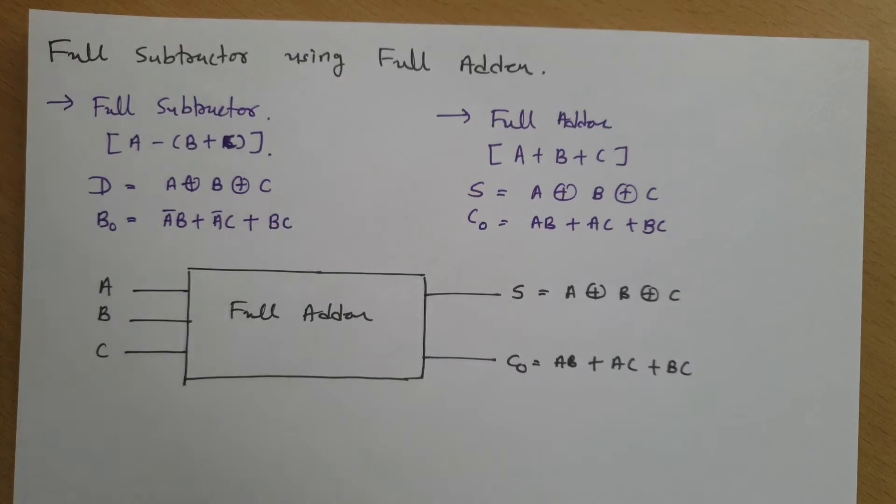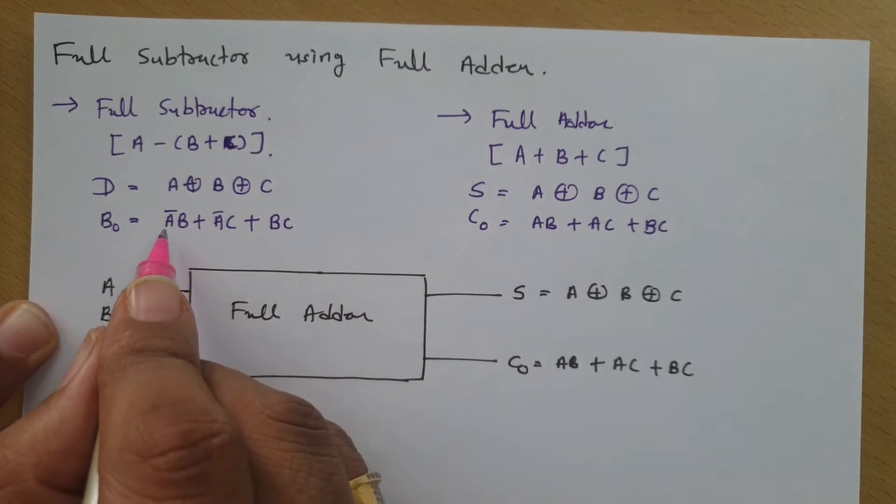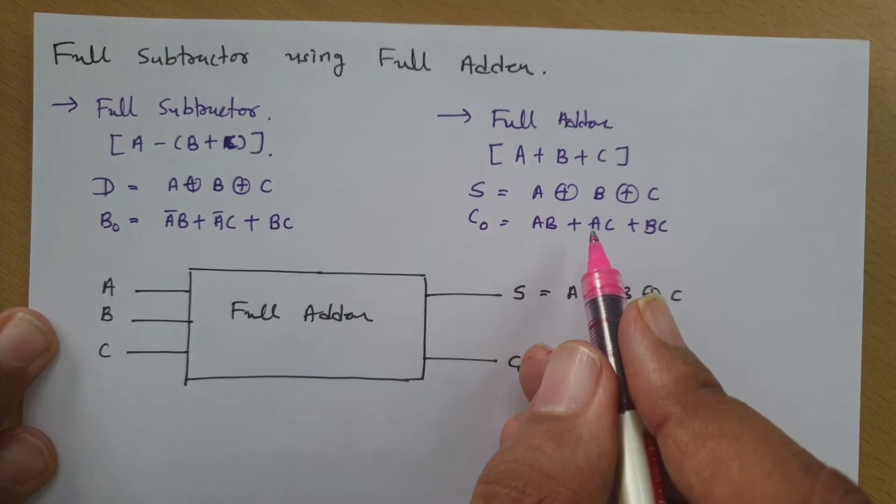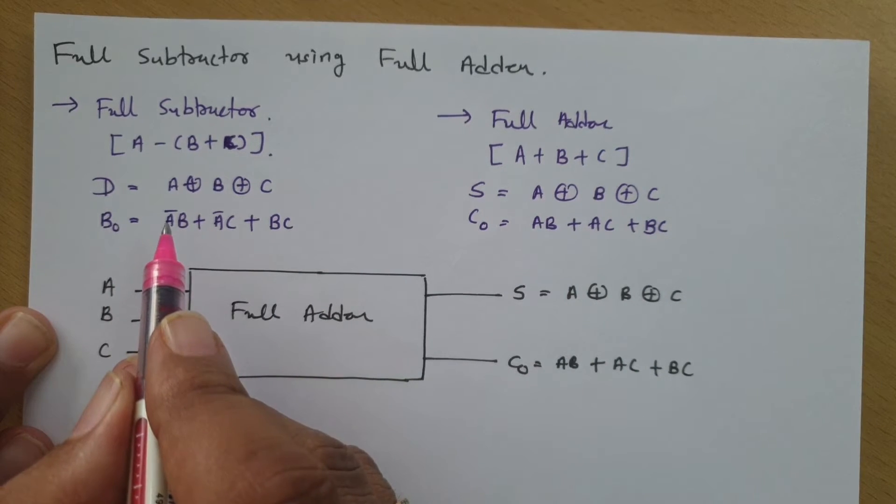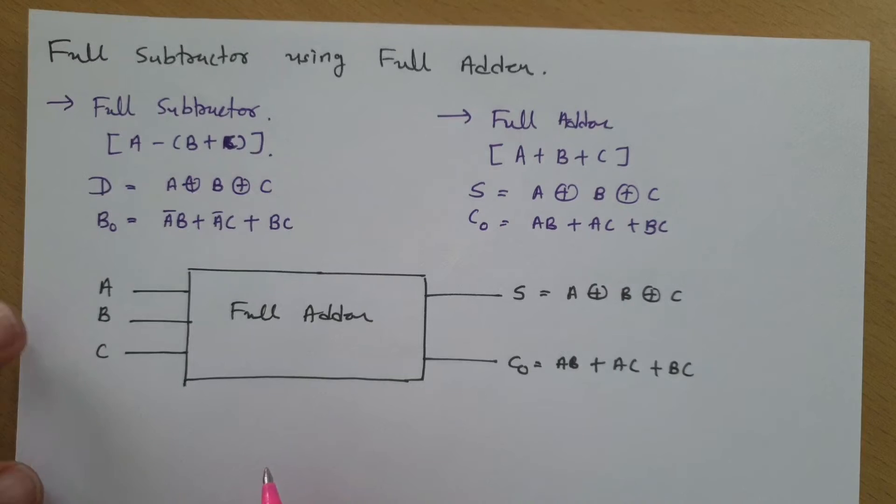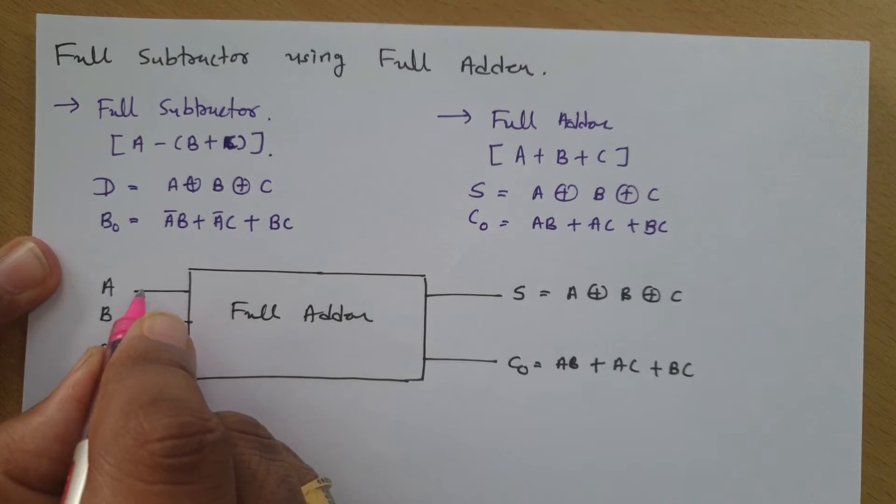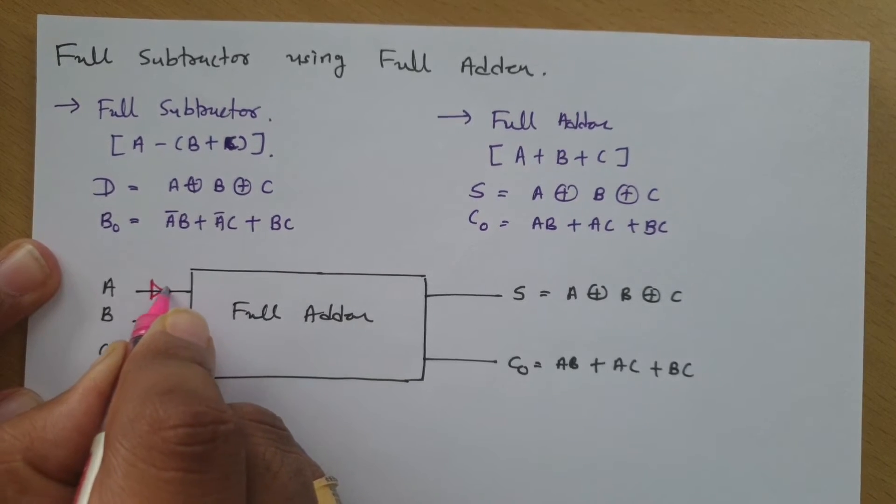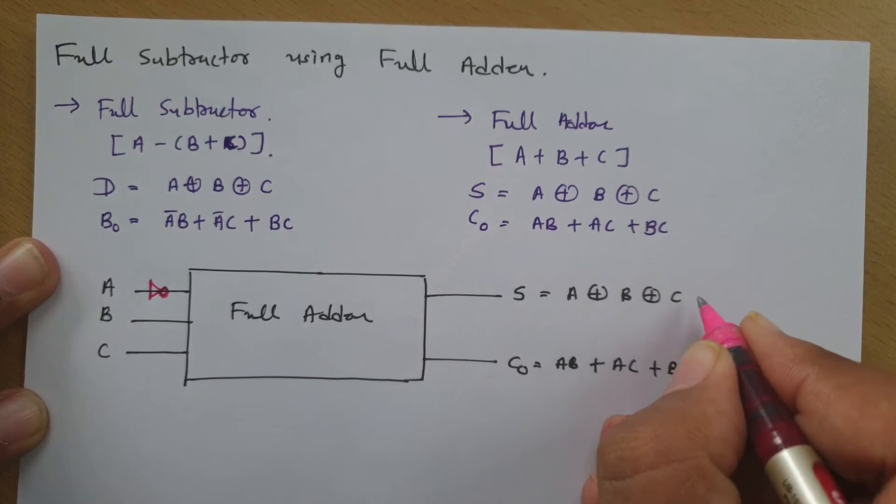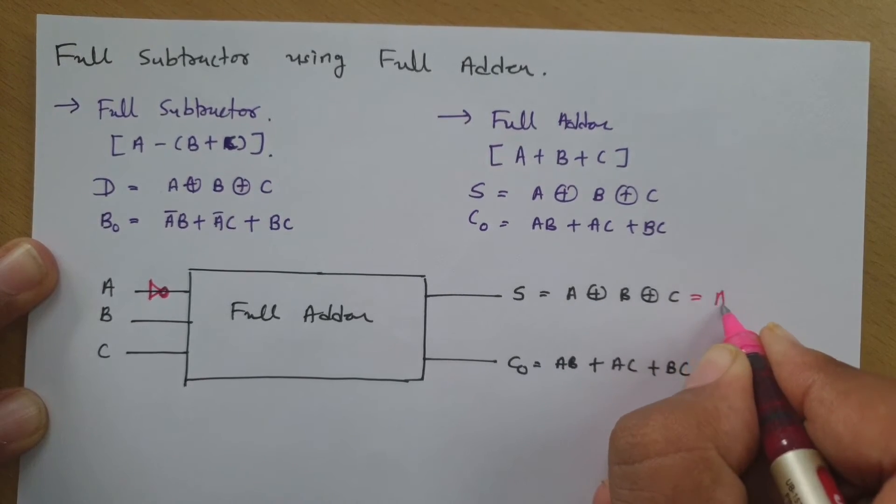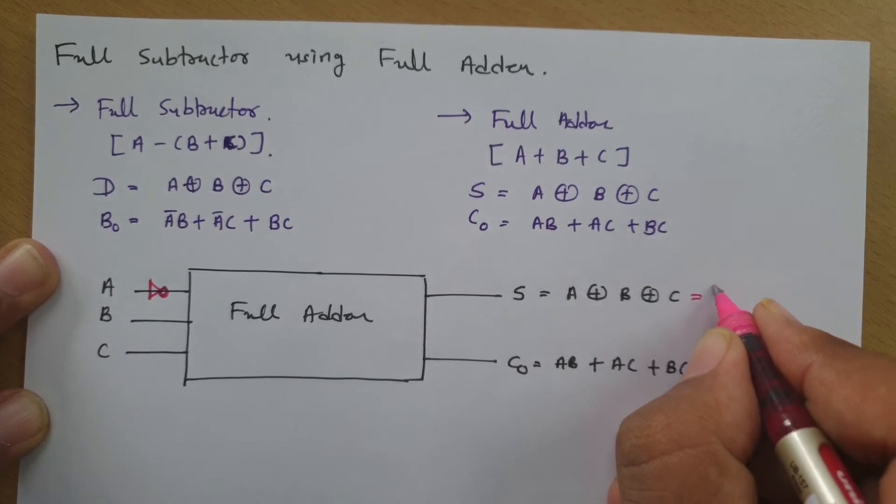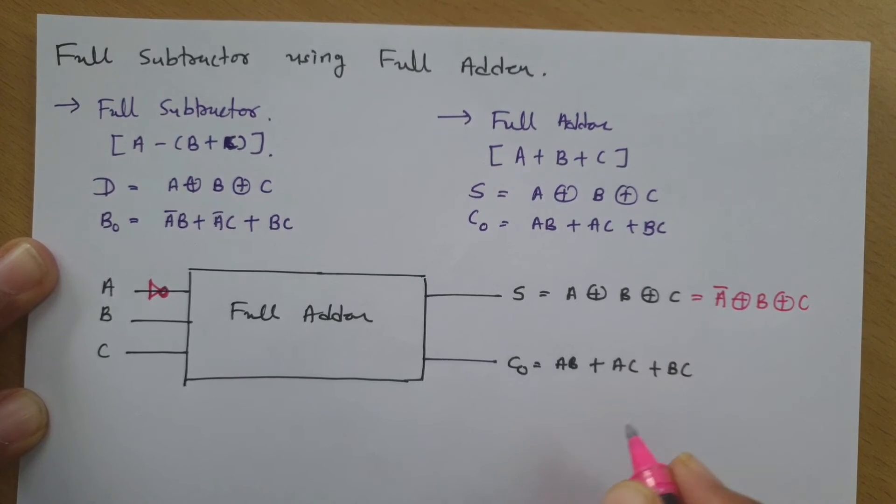Now to have subtractor, all we need is A bar and borrow. Instead of AB plus AC plus BC, I want to have A bar B plus A bar C plus BC. So for that, if I consider one NOT gate over here at terminal A, now our equation will change. You can see now this equation will be, instead of A, the full adder will be resulting into A bar B plus A bar C plus BC.